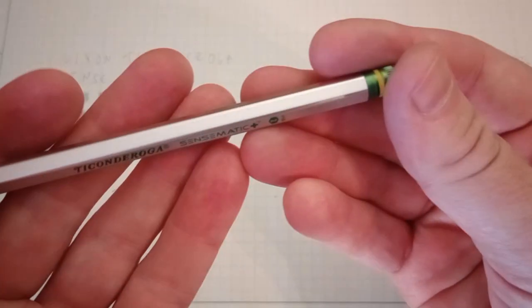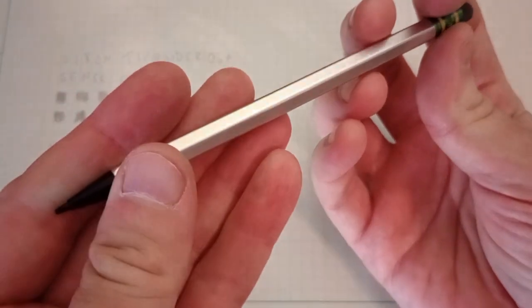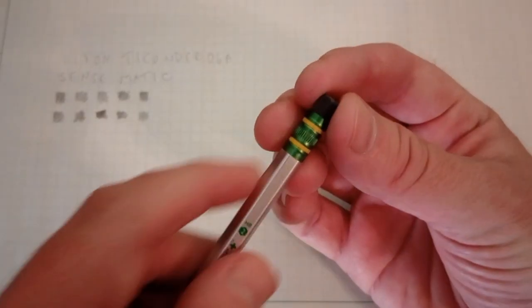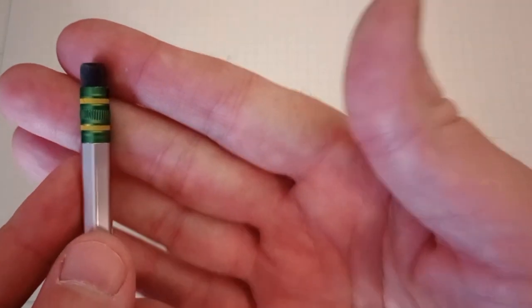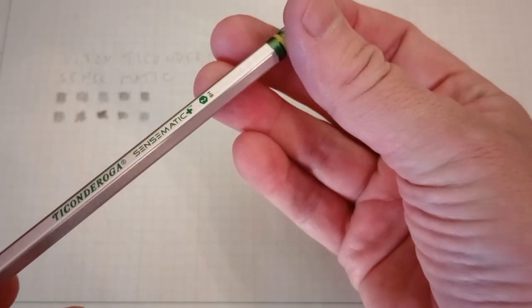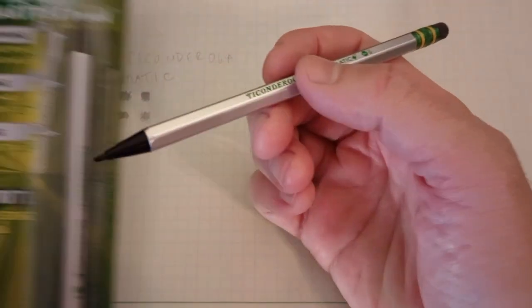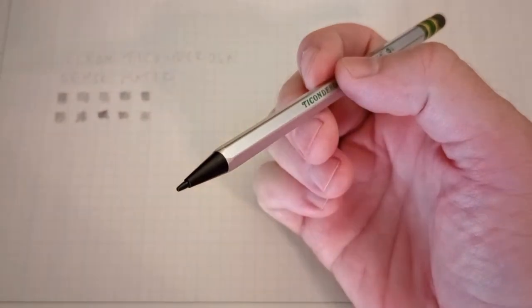It's rather a handsome pencil too. I don't know if this came in other colors. Standard Ticonderoga yellow, for instance, or in the black like the previous one. This one looks a little more high-tech. A little fancier than the previous one. Black eraser. Standard Ticonderoga ferrule. Ticonderoga Sensomatic. So the Sensomatic is on the pencil. Just not on the marketing, on the bubble packaging here.